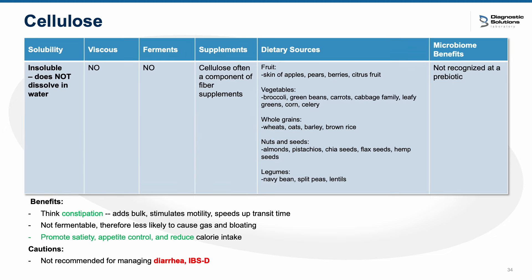Moving on to insoluble fiber — one fiber to highlight here is cellulose. Cellulose gives vegetables their structural support — providing rigidity and strength to plant cell walls. As a reminder, insoluble fibers act like a broom to sweep debris along, versus soluble fiber which acts more like a sponge. Cellulose helps add bulk to stools, stimulates motility through intestinal wall stimulation promoting peristalsis, and can speed up transit time. This is something to incorporate for constipation. Avoid recommending high doses of insoluble fiber in diarrhea or IBS-D.